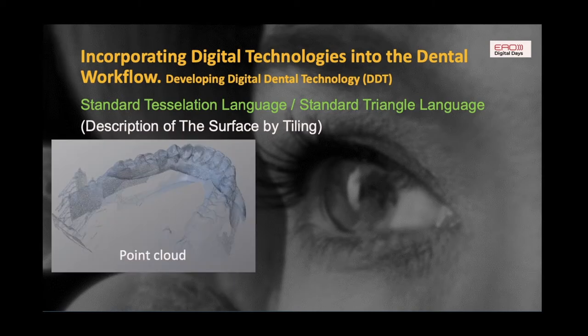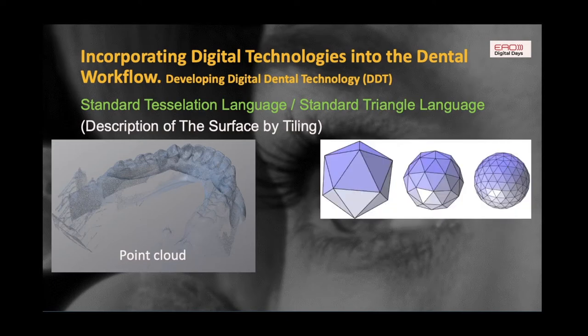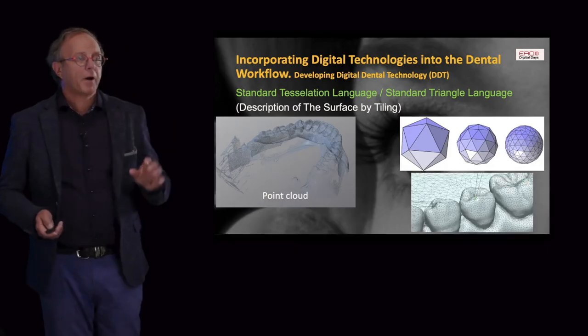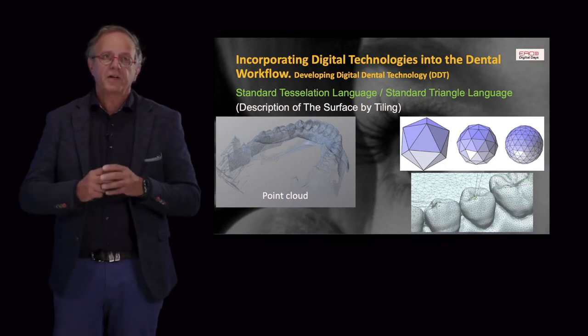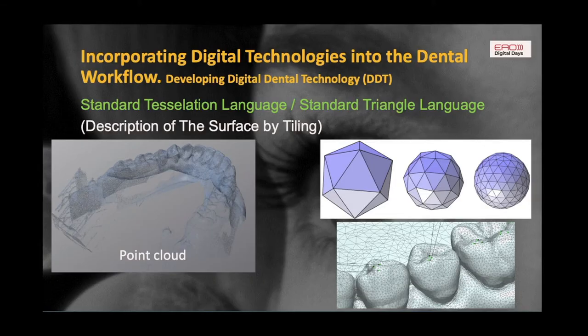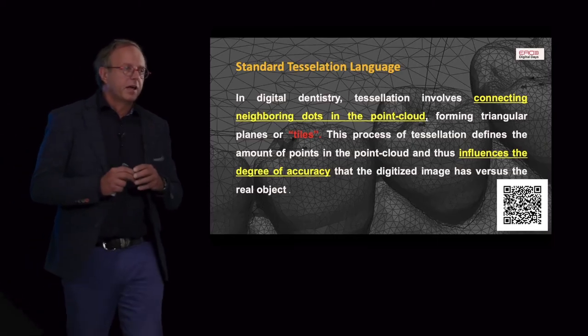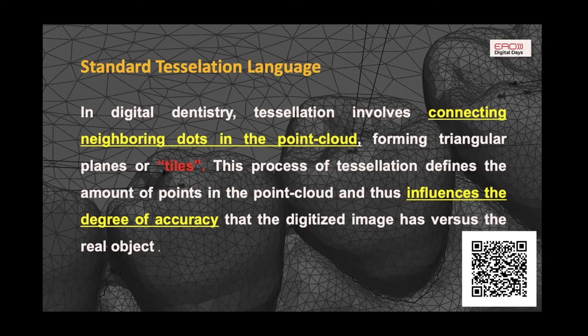We learned about point clouds. When we make an intraoral scan, or when a dental laboratory scans a model or impression, we end up with a point cloud, and you have to do something with this to make it a surface. We call that tiling, using the standard tessellation language. By connecting the point clouds together you can make a volume. In digital dentistry, tessellation involves connecting neighbouring dots forming triangular planes or tiles, and the number of points influences the degree of accuracy of the digitised image versus the real object.